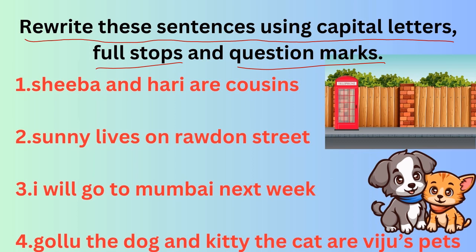First sentence: 'Shiba and Hari are cousins.' What is the mistake? Shiba is a name, so S should be in capitals. Also, the first letter should always be in capitals. Hari is also a name, so H should also be in capitals. 'Shiba and Hari are cousins.' After completing each sentence, make sure to put the full stop.